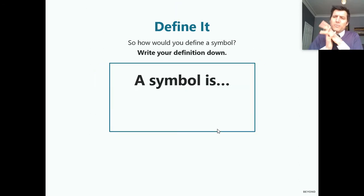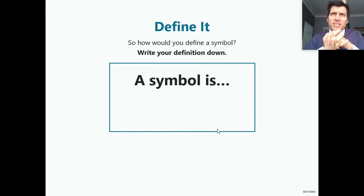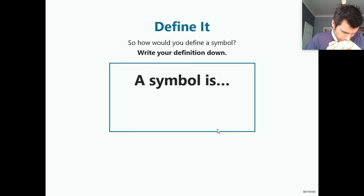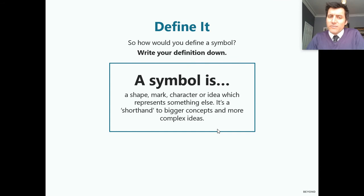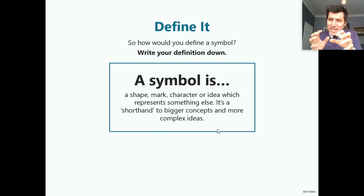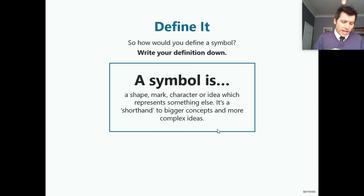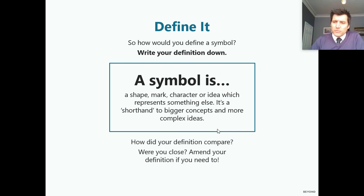So what do they show? Can you say out loud — or to somebody else — what a symbol is? A symbol is a shape, mark, character, or idea which represents something. It's not about what it is but about what it shows or what belief it represents. It's like a shorthand — a simple way of saying or showing an idea.